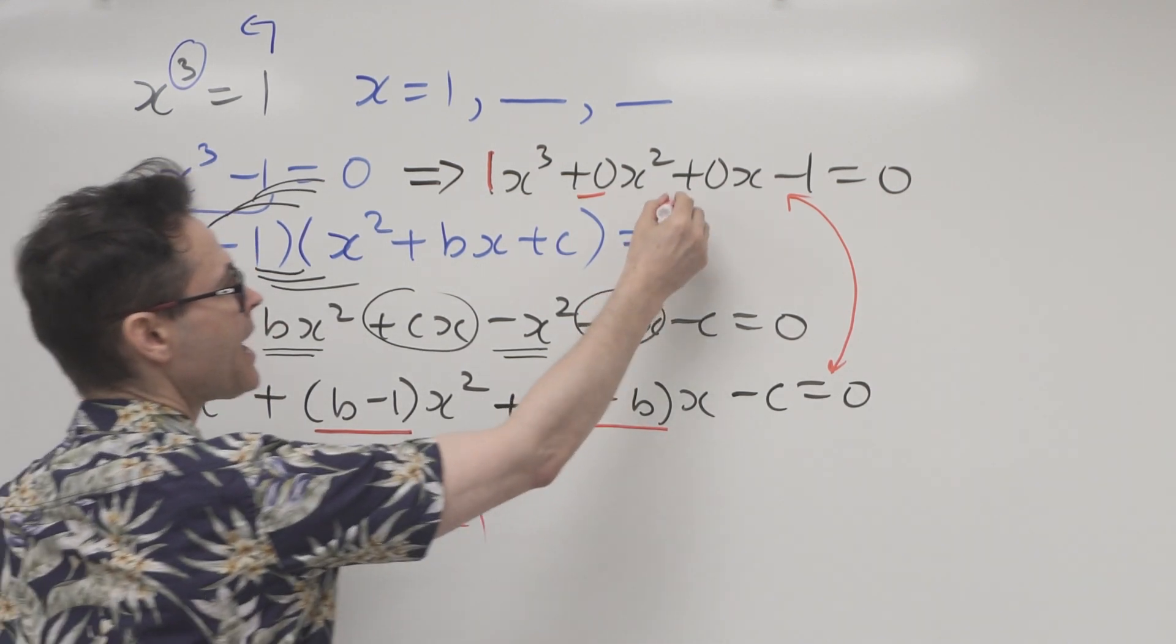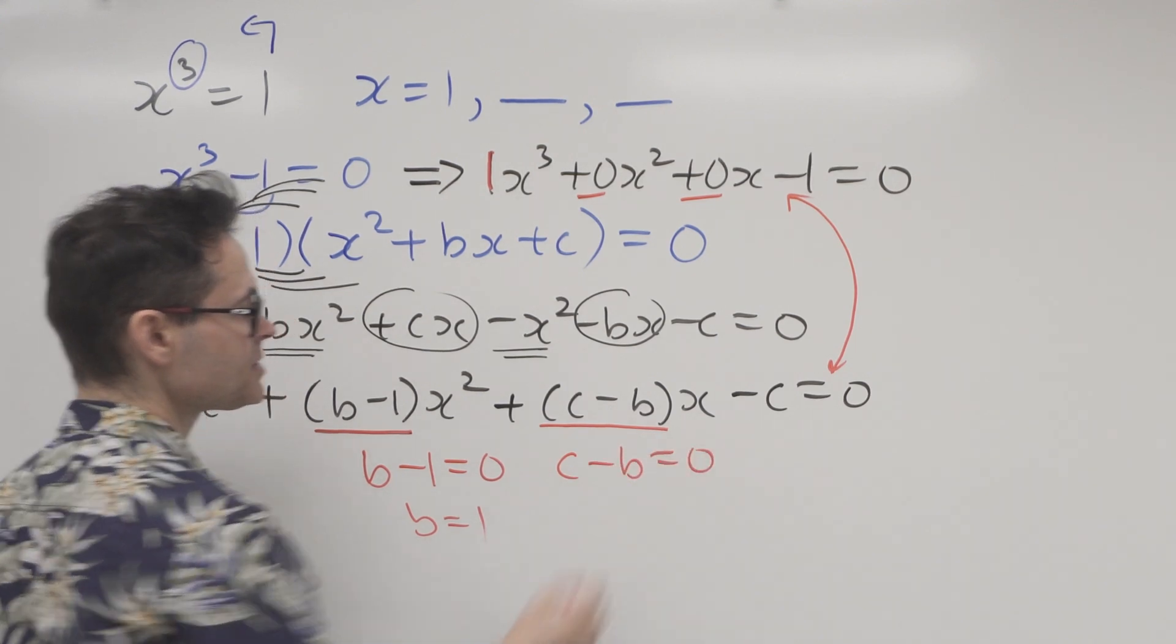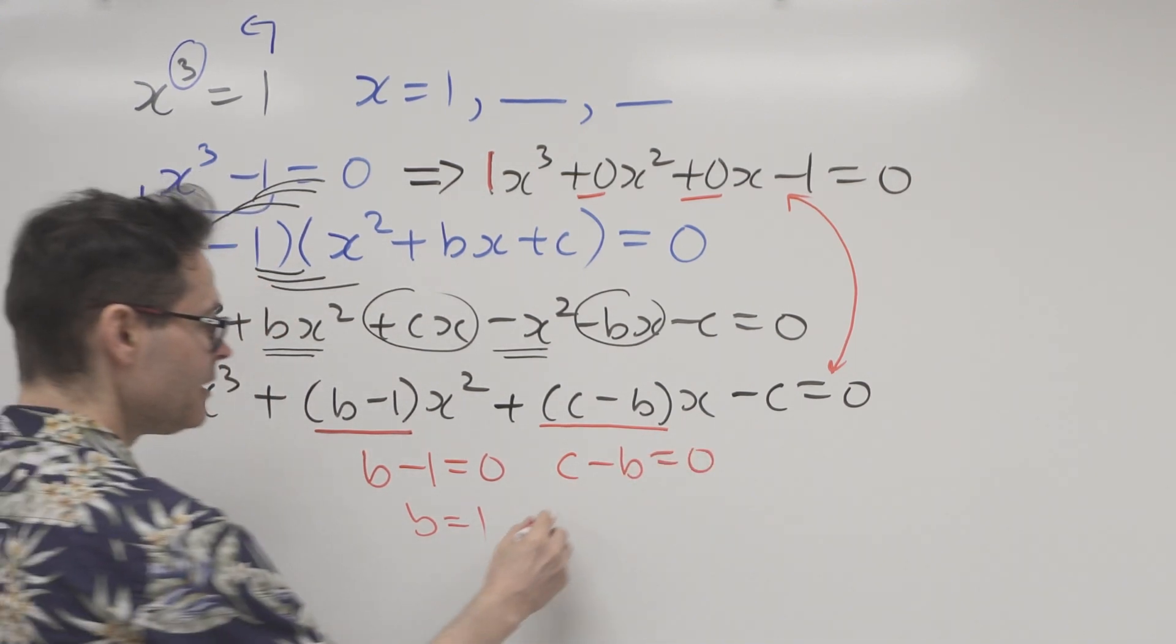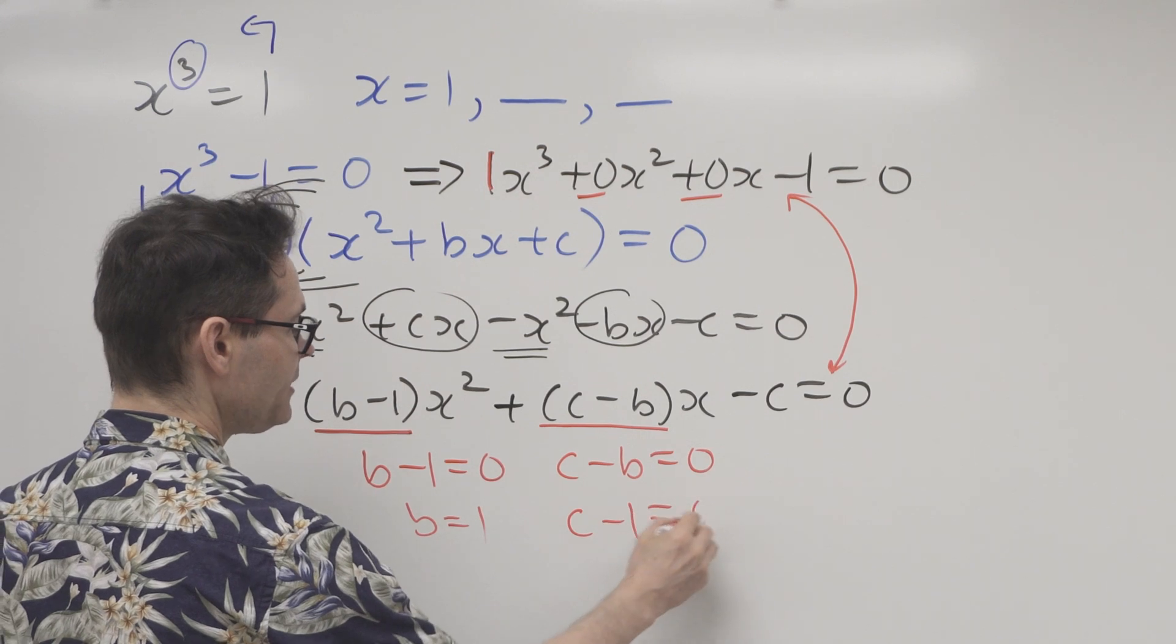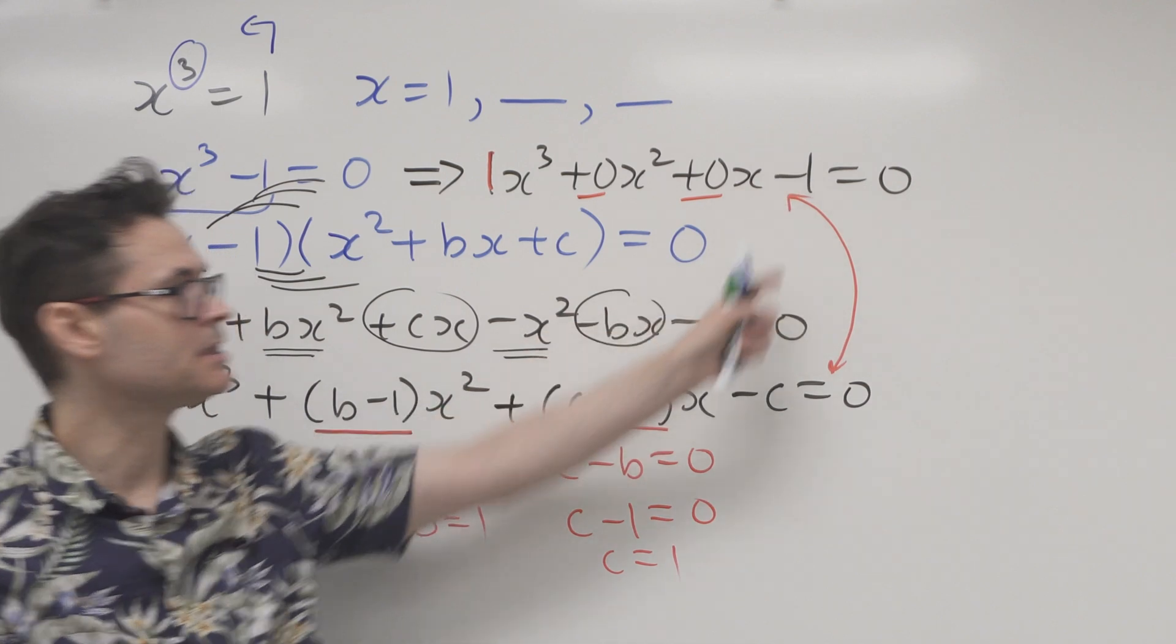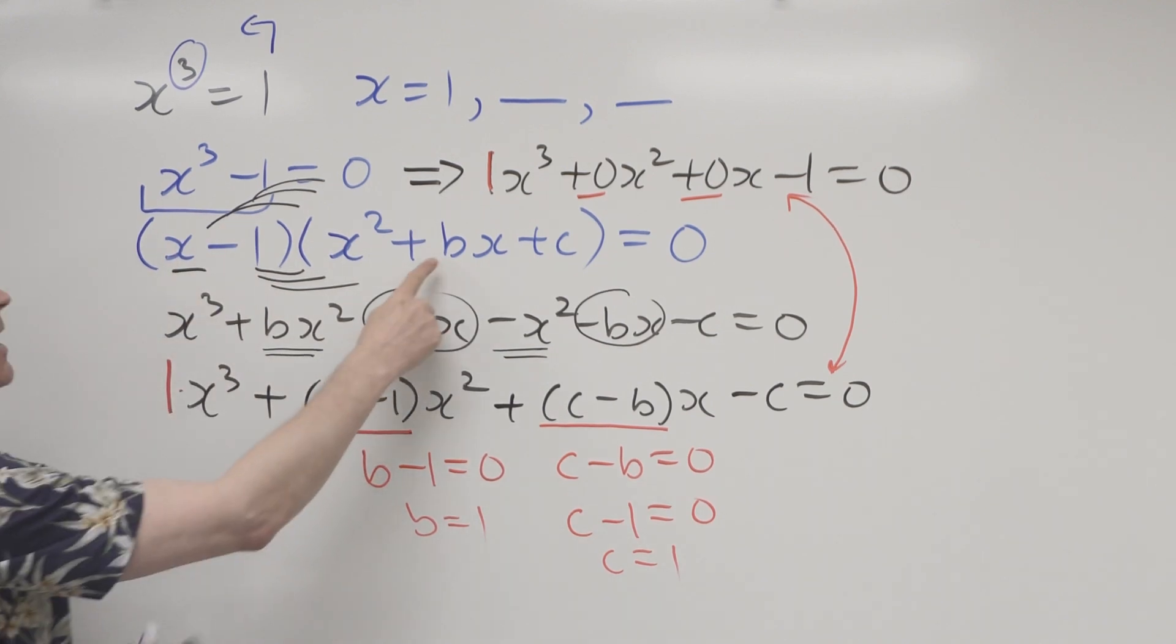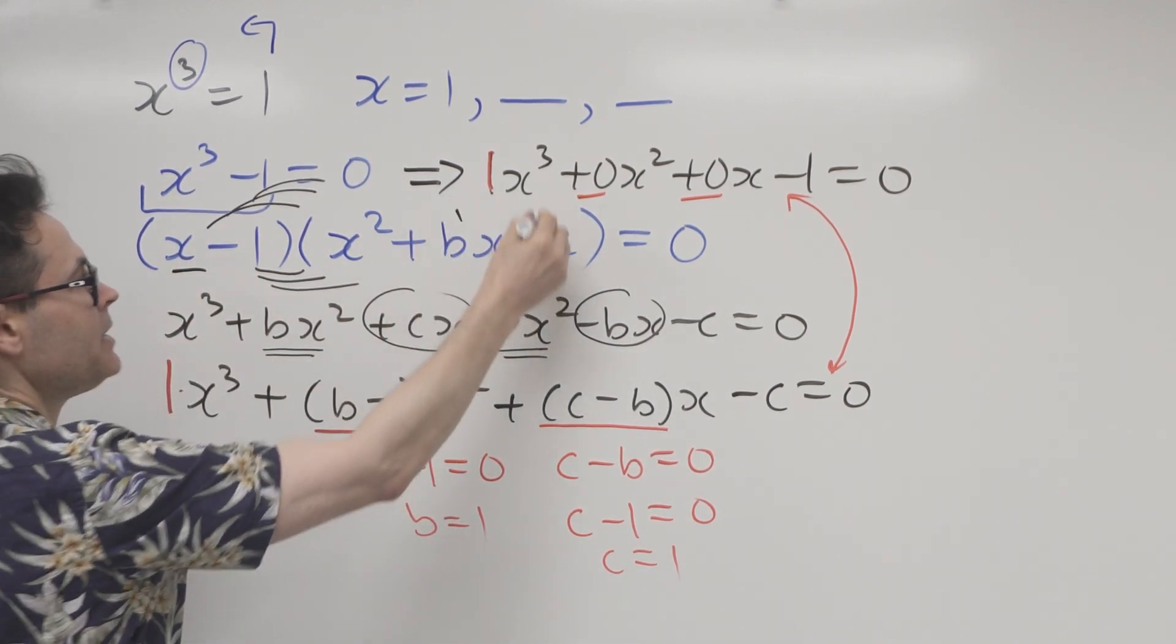Keep going. That means that this coefficient has to be the same as that coefficient. So c minus b has to equal zero. We already know what b is, it's one. So that's c minus one equals zero or c is equal to one. I could have also deduced that c is one using the constant term as well. Well, why is that important? Well, look, I can come back to the blue equation here and I can put my values in one and one.